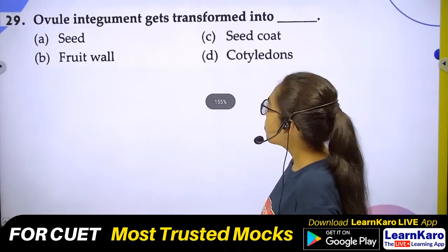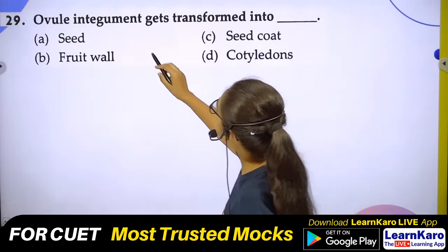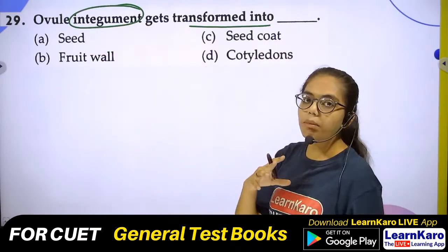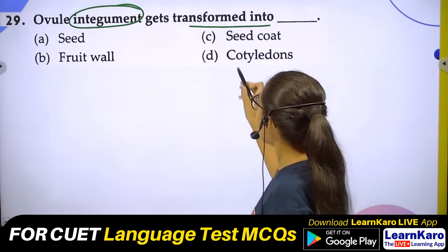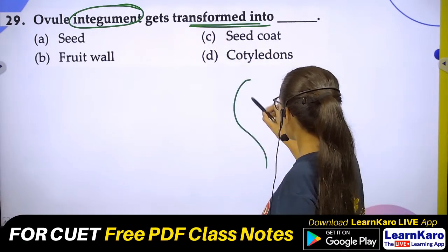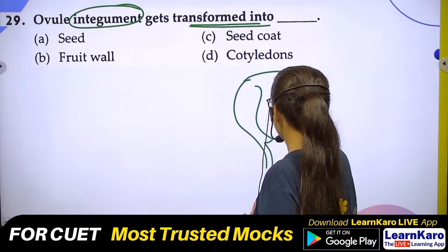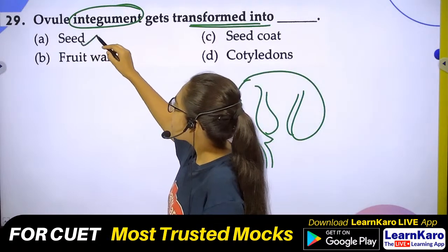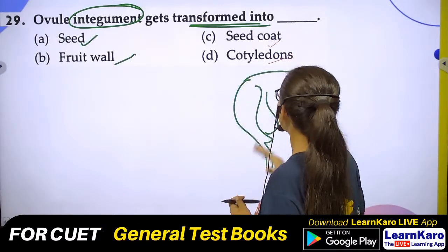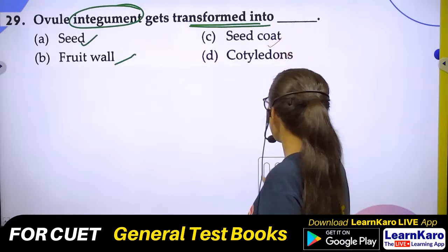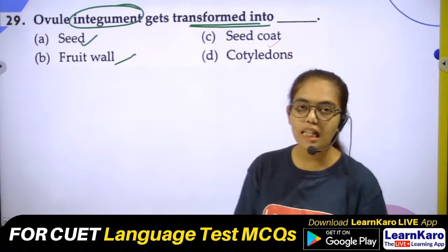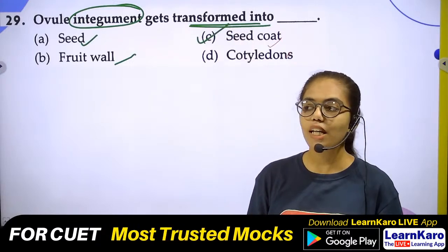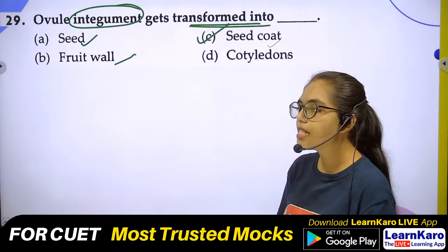Question 30: Ovule integuments get transformed into — Seed, Seed coat, Fruit wall, or Cotyledon? The integuments of the ovule provide protection, just as the seed coat protects the seed. When the ovule becomes a seed, the integuments transform into the seed coat. Correct answer is Option C — Seed coat.